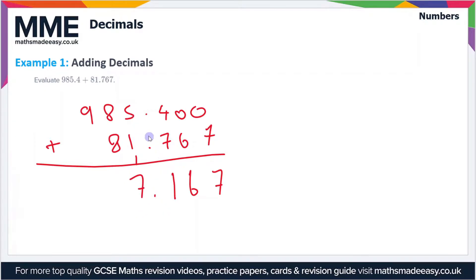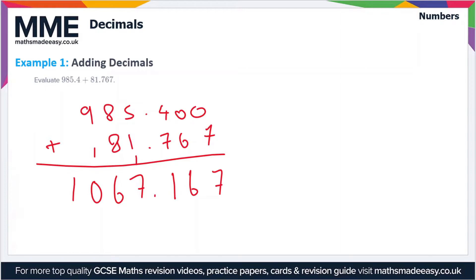We've got 5 plus 1 plus 1 which is 7, 8 plus 8 is 16, carry the 1, and we've got 9 plus 1 which is 10, carry the 1. So we get 1067.167 as our final answer.